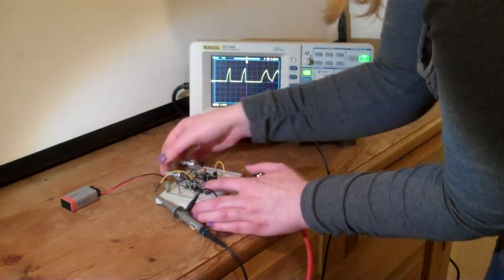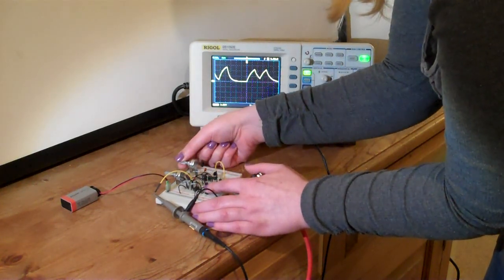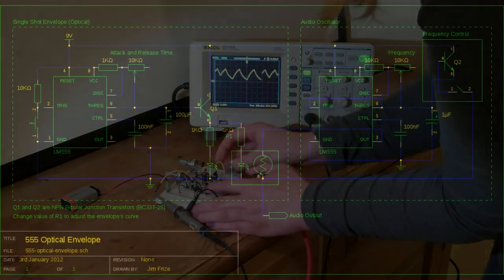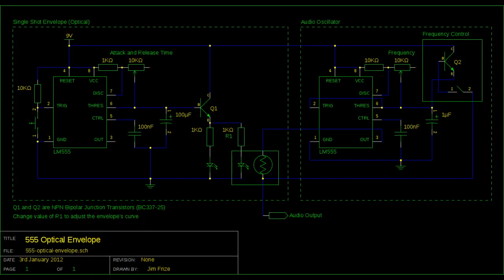What we're going to do now is solder this circuit onto a circuit board, build it into an enclosure and in the meantime if you fancy having a go yourself you can head on over to our website which is sonodrome.co.uk and you can grab the schematics from there.